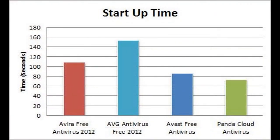Panda took top place in boot up time, whereas AVG took first place in the scan time benchmark. What it comes down to is that Panda is a very light antivirus program that runs off the server — that's why it's called Panda Cloud. So if you want antivirus software that will not influence your boot time much, I would pick Panda, just on the basis that you can start up your computer so quickly and get going.